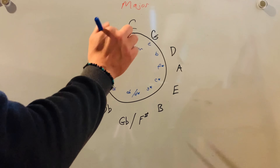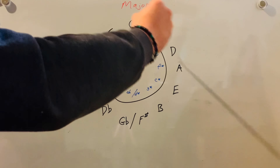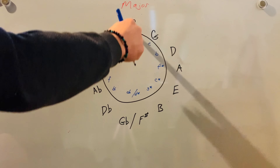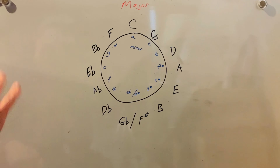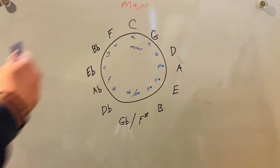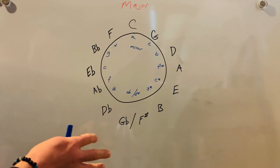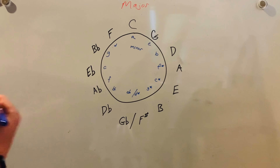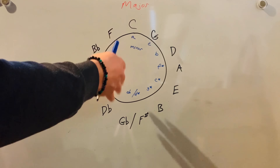Continuing around: key of D flat, relative minor is B flat. Key of A flat is F minor. Key of E flat major, C is its relative minor. Key of B flat major, G is its relative minor. And the key of F major, its relative minor is D minor. So the inside of the circle of fifths shows you the minor keys that correspond to the major keys on the outside — they share the exact same notes.